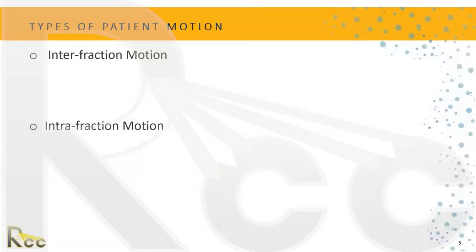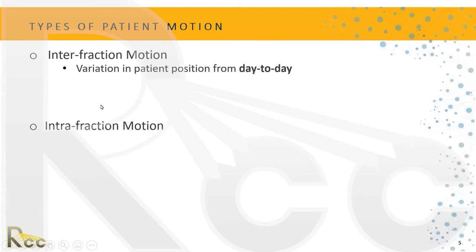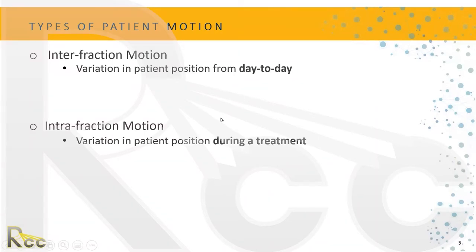What types of patient motion are there? There's interfraction and there's intrafraction. Interfraction is variation in patient position from day to day — Monday to Tuesday to Wednesday and so on. Intrafraction is variation during the treatment itself, such as between an AP treatment and the RAO, where there's a difference in where the patient was positioned.